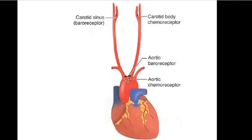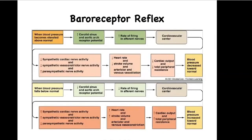In this illustration, on the left you can see the baroreceptors in the carotid sinus, and you can also see the baroreceptors in the aortic arch. We'll talk about the chemoreceptors later. Let's go over how the baroreceptor reflex works.